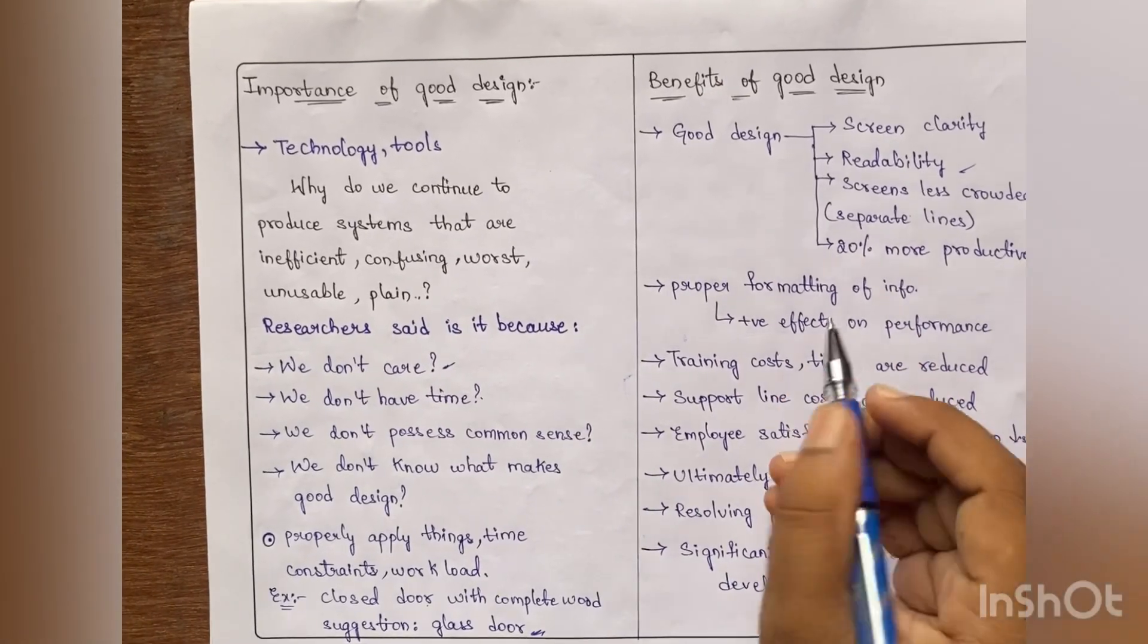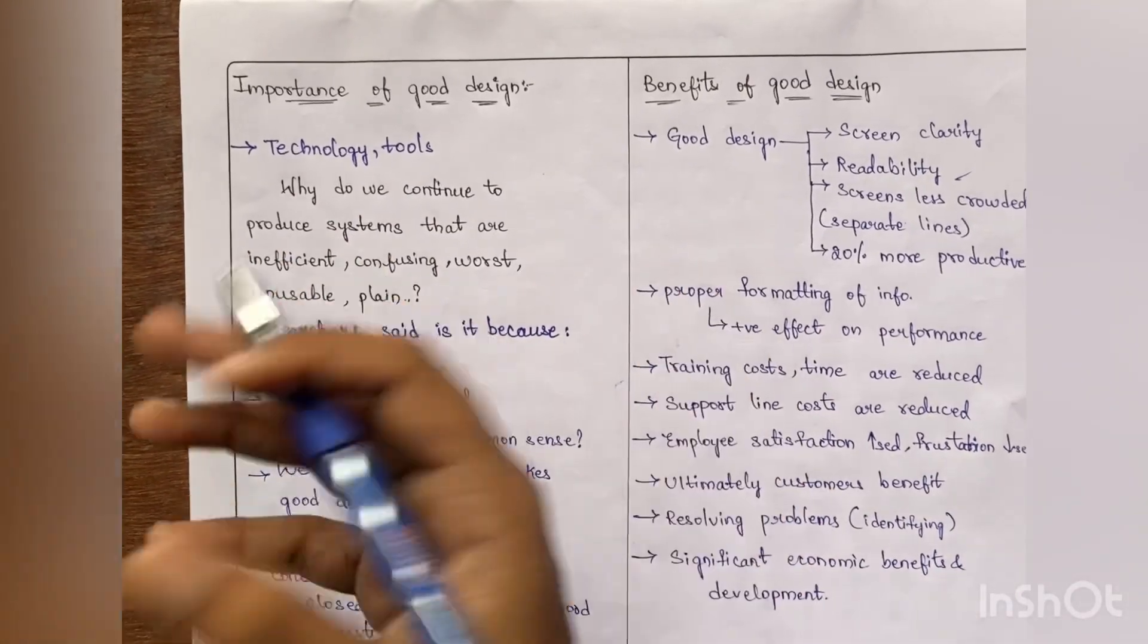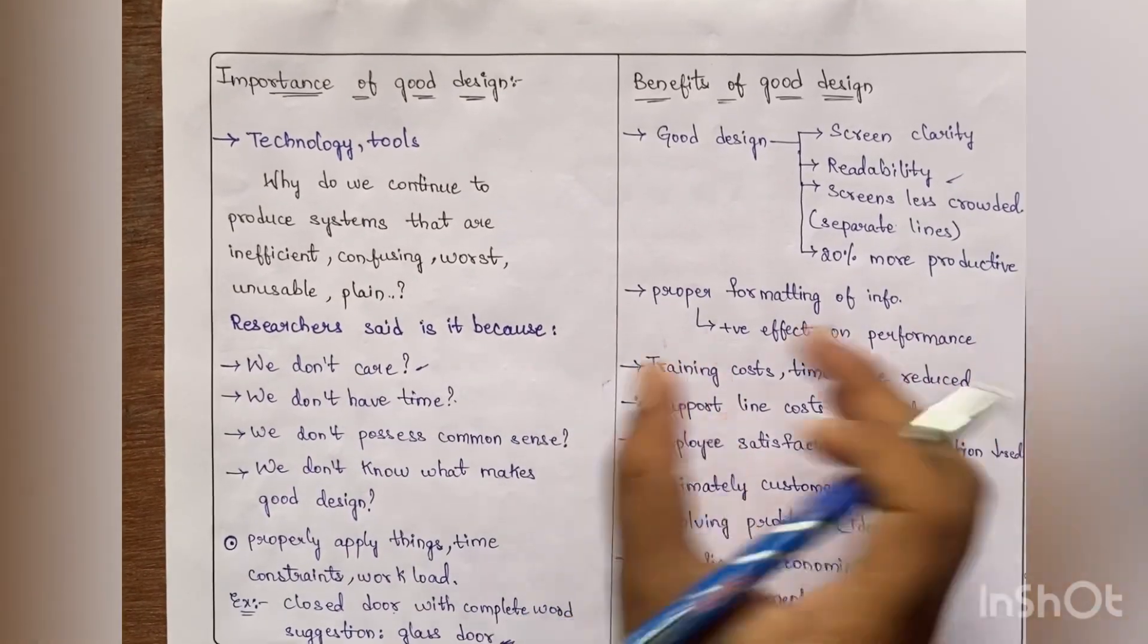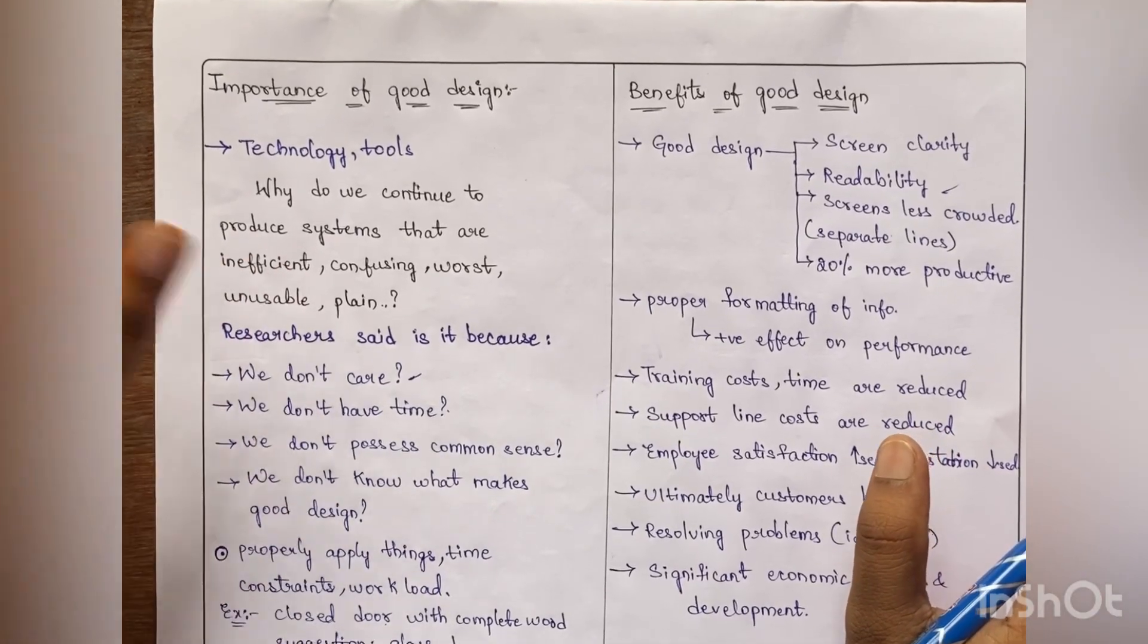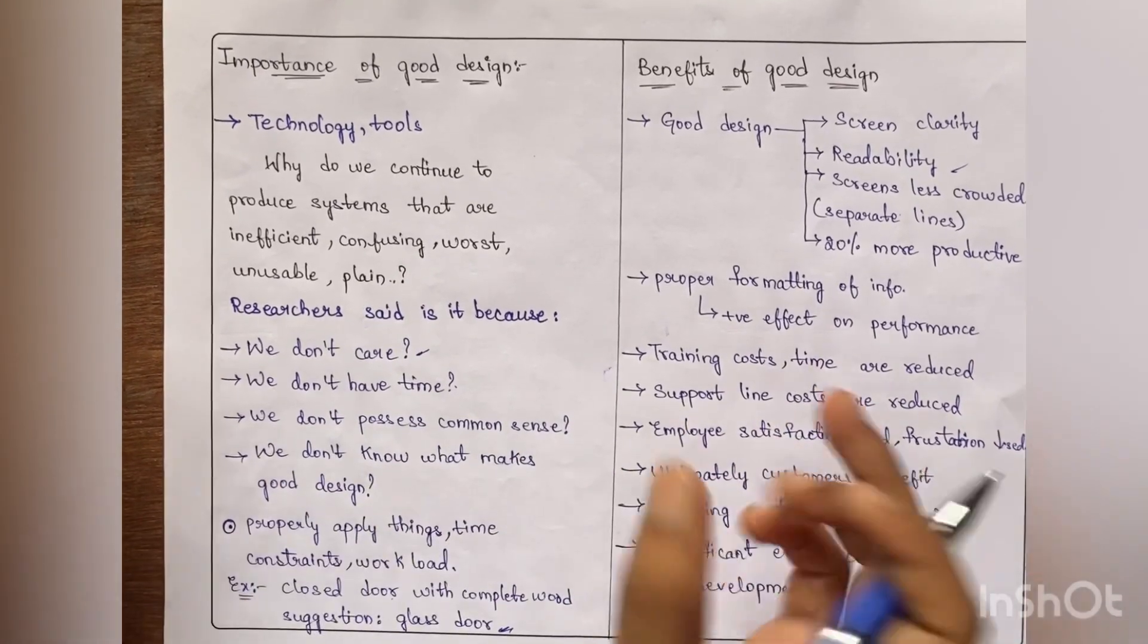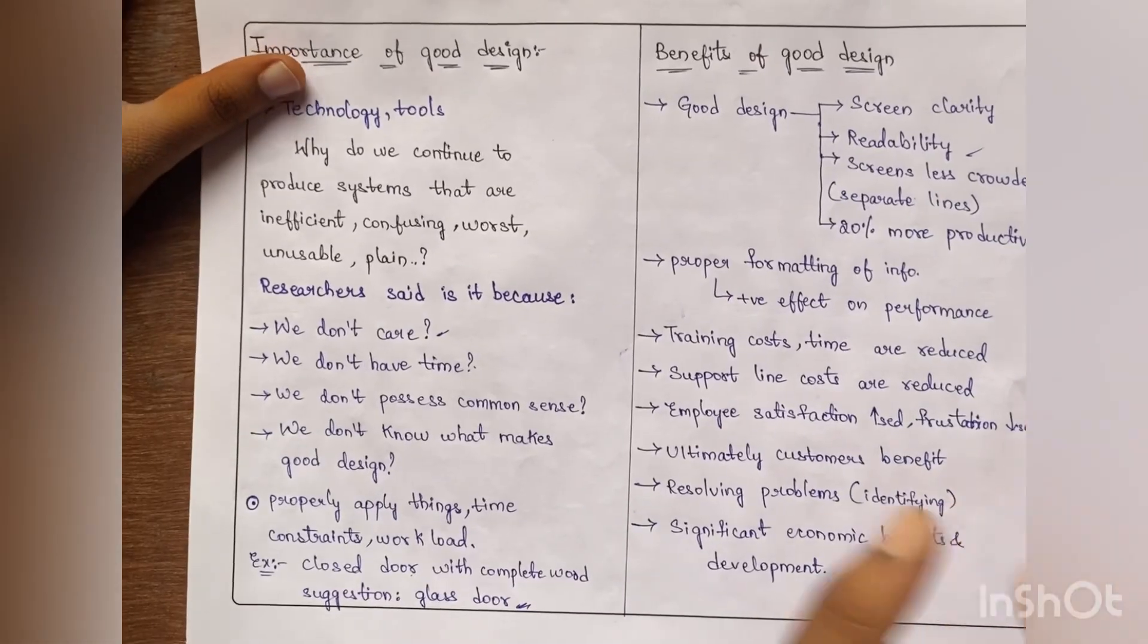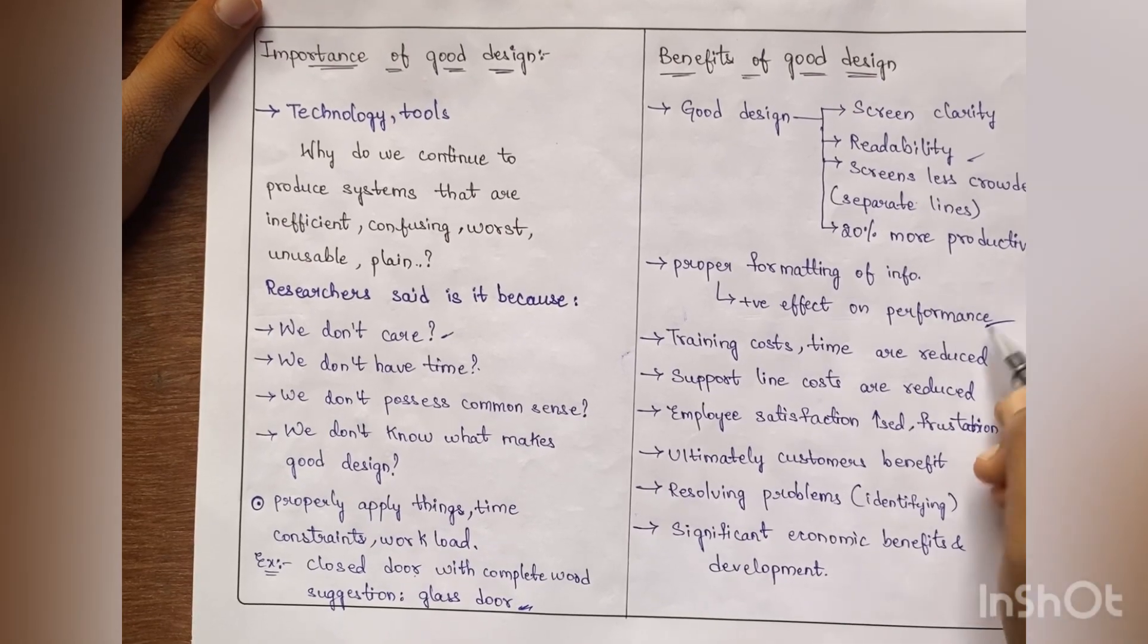The second one is proper formatting of the information. When the information is properly formatted, say suppose when you open a website like GeeksforGeeks or something. In that website, whenever we observe the titles, they are with some bold letters, and other content in normal font. Here they are separating what is important, what is a bit ignored things. Because of that reason we are directly able to identify what are the important points, what are the images which we need to remember for our exam times. That formatting is important. Because of that formatting, our performance also increases. We can able to remember things very clearly and our performance is increased.